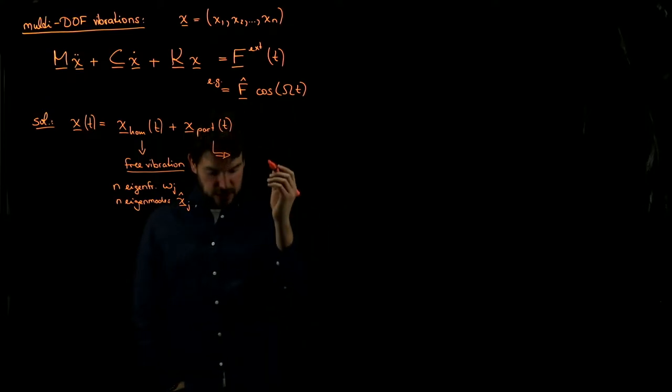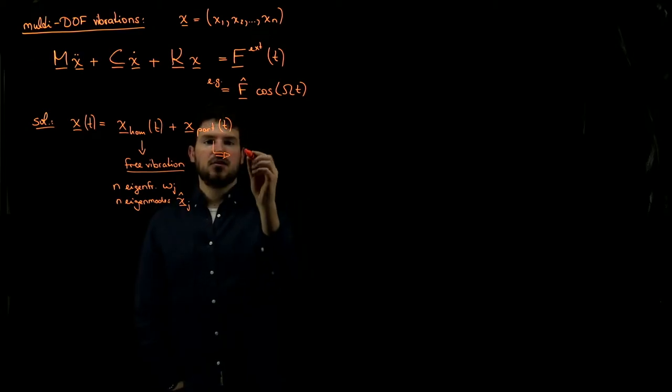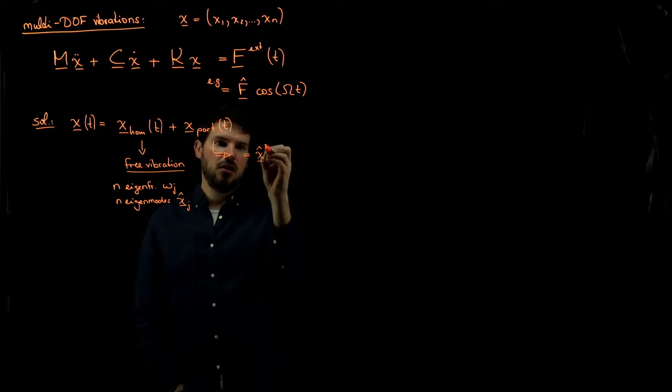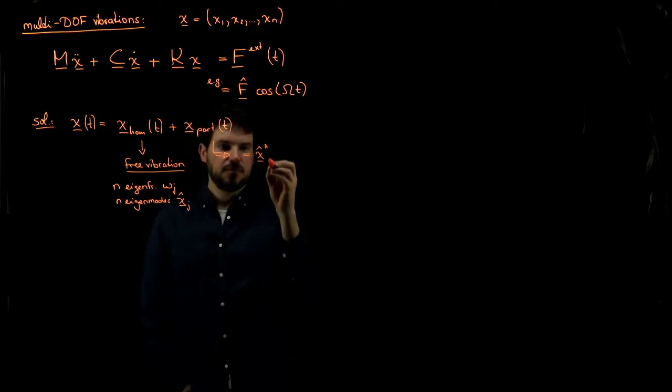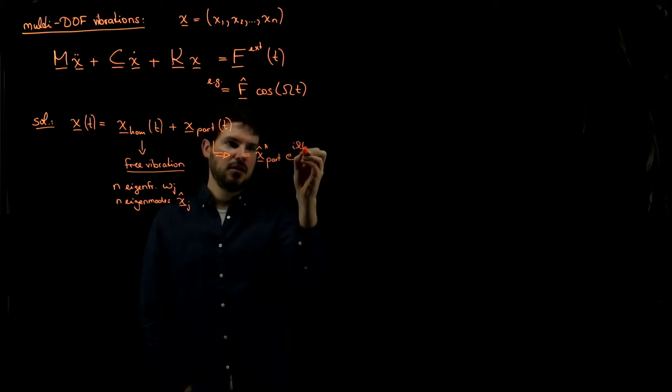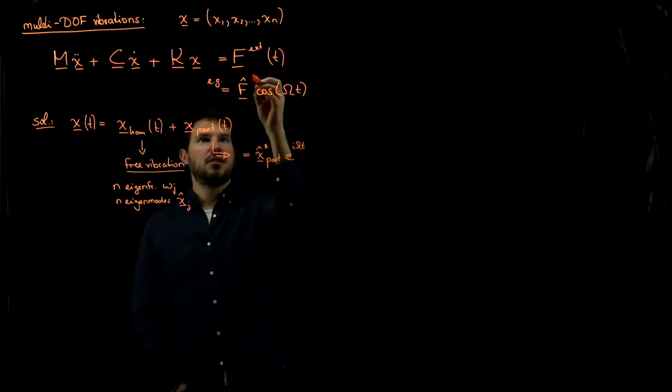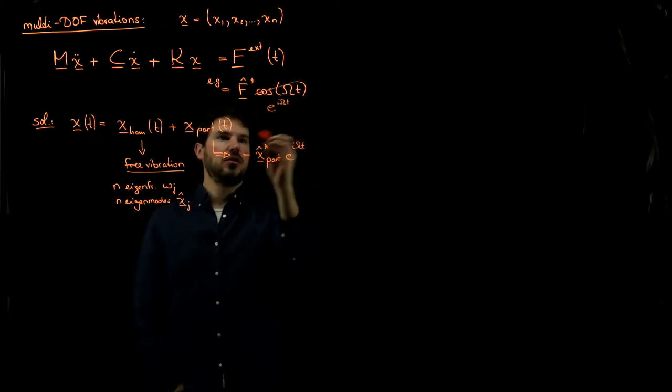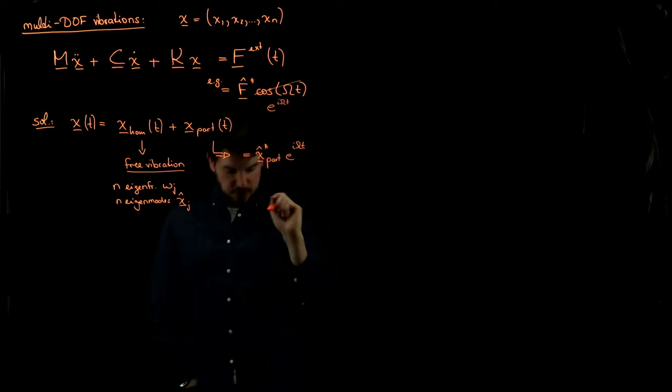And in this particular case, what we would find is that if we say that this over here can be written as some x hat star complex amplitude times e to the i omega t, again writing this as f hat star times e to the i capital omega t. We know that the solution should look like this.